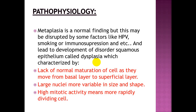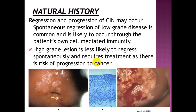Disruption leads to development of disordered squamous epithelium called dysplasia, characterized by lack of normal maturation of cells as they move from the basal layer to the superficial layer, large nuclei more variable in size and shape, and high mitotic activity meaning more rapidly dividing cells. Spontaneous regression of low-grade disease is common and likely occurs through the patient's own cell-mediated immunity. High-grade lesions are less likely to regress spontaneously and require treatment due to risk of progression to cancer.